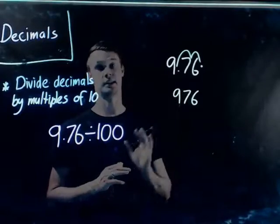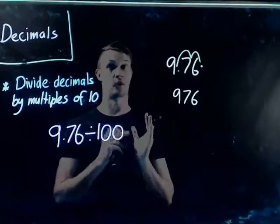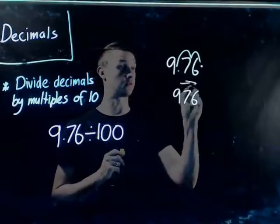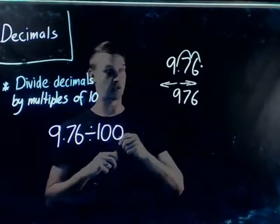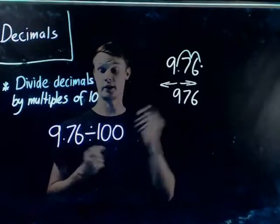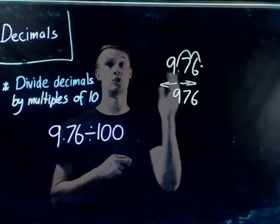Now if we're doing division, we're just basically going the opposite way. Instead of going to the right, we're just going to go to the left, to make this number smaller. So, if we had 9.76 divided by 100, we would just move the decimal places two to the left.